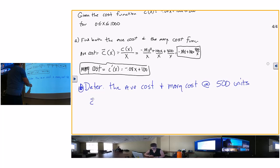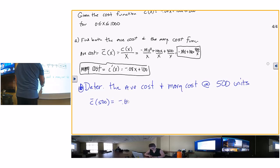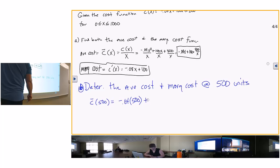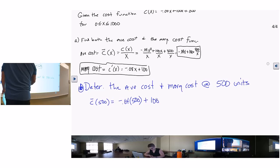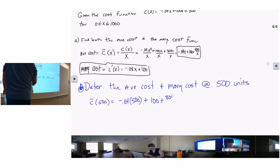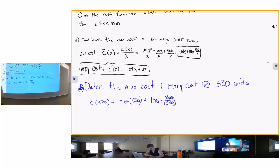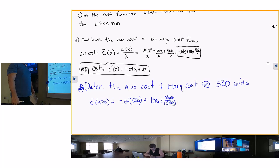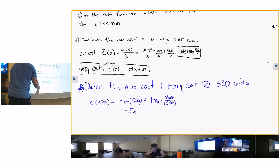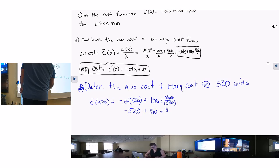So the average cost is going to be c line of 500 equals negative 0.04 times 500 plus 100 plus 800 over 500. Let's see - 10% of 500 is 50, right? So 1% of 500 would be 5. 5 times 4 is 20. So that's going to be negative 20.